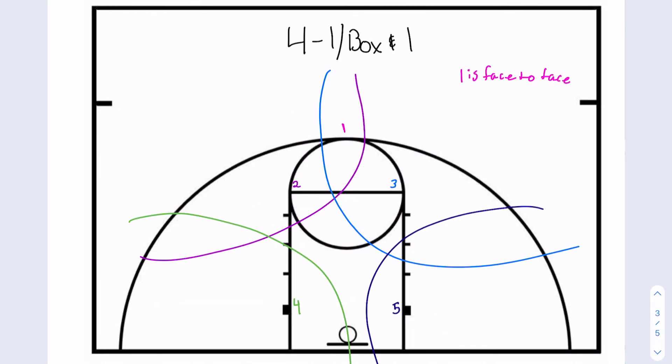And then our fourth zone is a 4-1 or a box in one. So what this is, is you can do this with any person if there's somebody you want to face guard. So if you're going to face guard right now, I have it so that the 1 is face-to-face. They're going face-to-face to the point guard. So I just have them at the top. And then you have your 2, 3, 4, and 5.